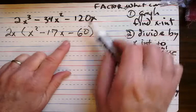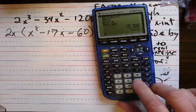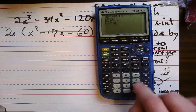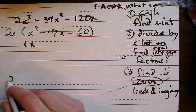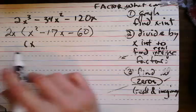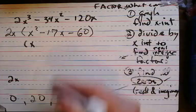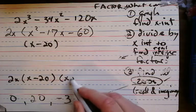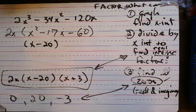So we have 2x times x squared minus 17x minus 60. I took the x out, so there's just one x now. That quadratic we can factor. So if I go to my quadratic formula and put in 1, negative 17, negative 60 — I get the x-intercepts. If 2x is a factor, then 0 is an x-intercept. And then I found the other x-intercepts to be positive 20 and negative 3. That means the factors are x minus 20 and x plus 3. I found all the factors, I found all the zeros. Factor out what's common — we are happy little campers.